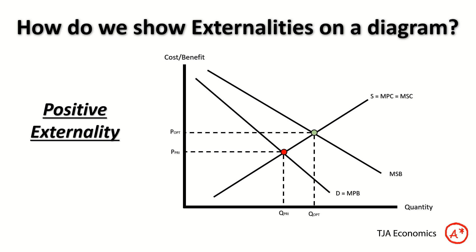The social optimum equilibrium of gym-going or education is different. P-opt is higher — we would like people to be more willing to pay for a gym membership — and Q-opt is higher too. We want more gym memberships; we want more people completing education. Because Q-opt is higher than Q-Pri, that causes deadweight loss, and we have underproduction and under-consumption. Resources would optimally be producing gyms and education, but they're not, so they are not optimally allocated and we have deadweight loss.